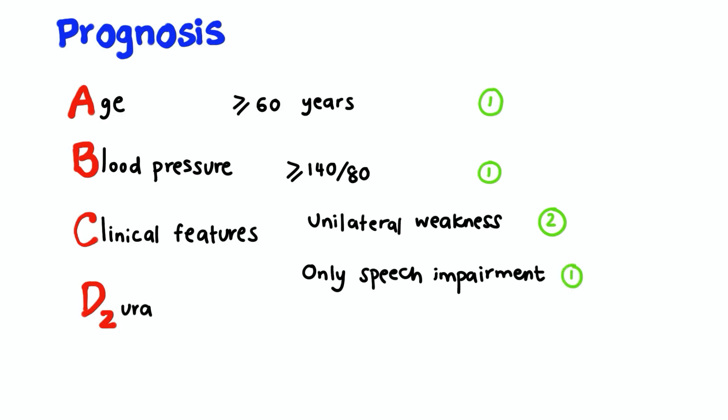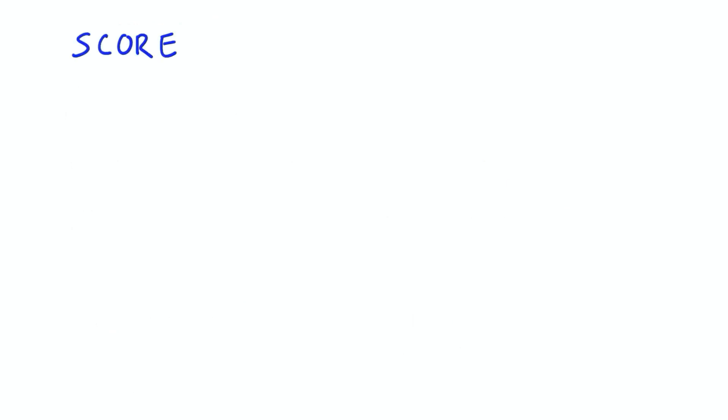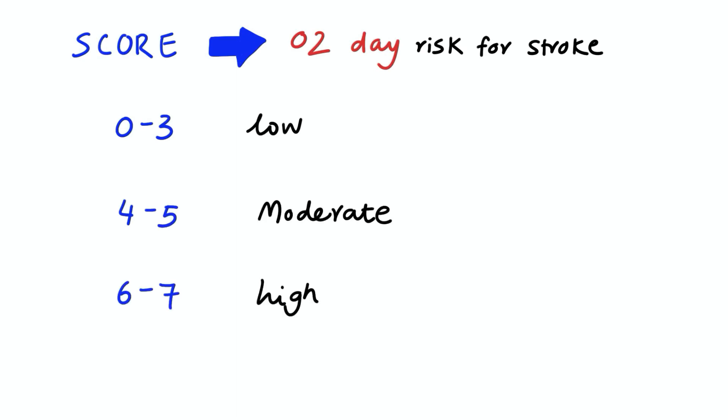D for duration: if the event occurred for more than 60 minutes that gets a score of 2. If it's between 10 to 59 minutes it gets a score of 1. The second D is for diabetes, if the patient has diabetes they get a score of 1. By looking at the total score you can predict their 2-day stroke risk. A total score of 6 to 7 is high risk, 4 to 5 is moderate risk, and 0 to 3 is low risk.